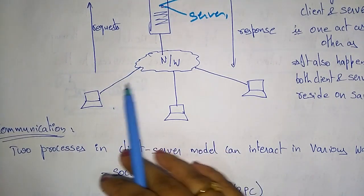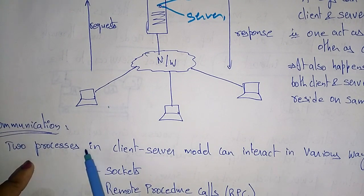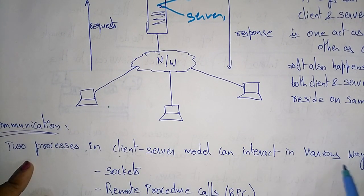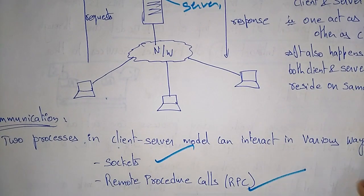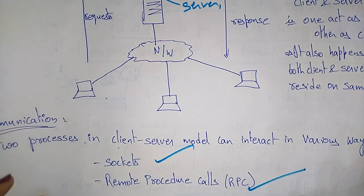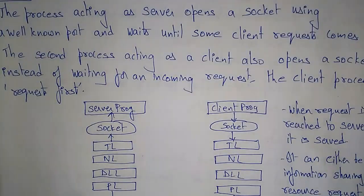Whatever communication is established in the application layer, in the client-server model there are two processes by which systems interact: one is a socket and another is a remote procedure call. With the help of these two processes, communication is established in the client-server model.